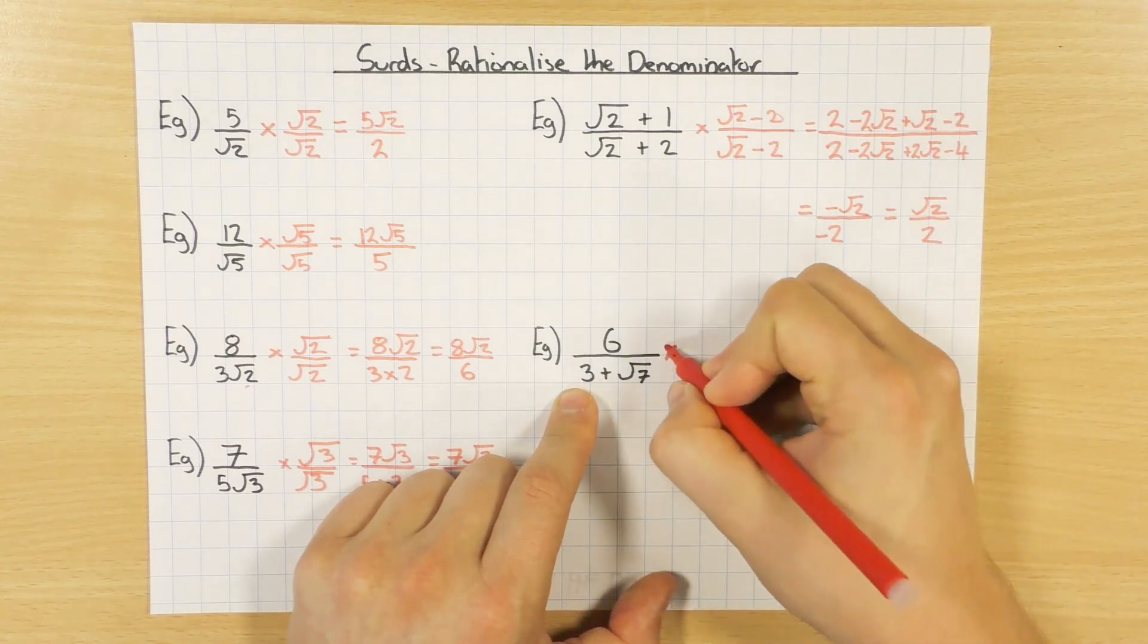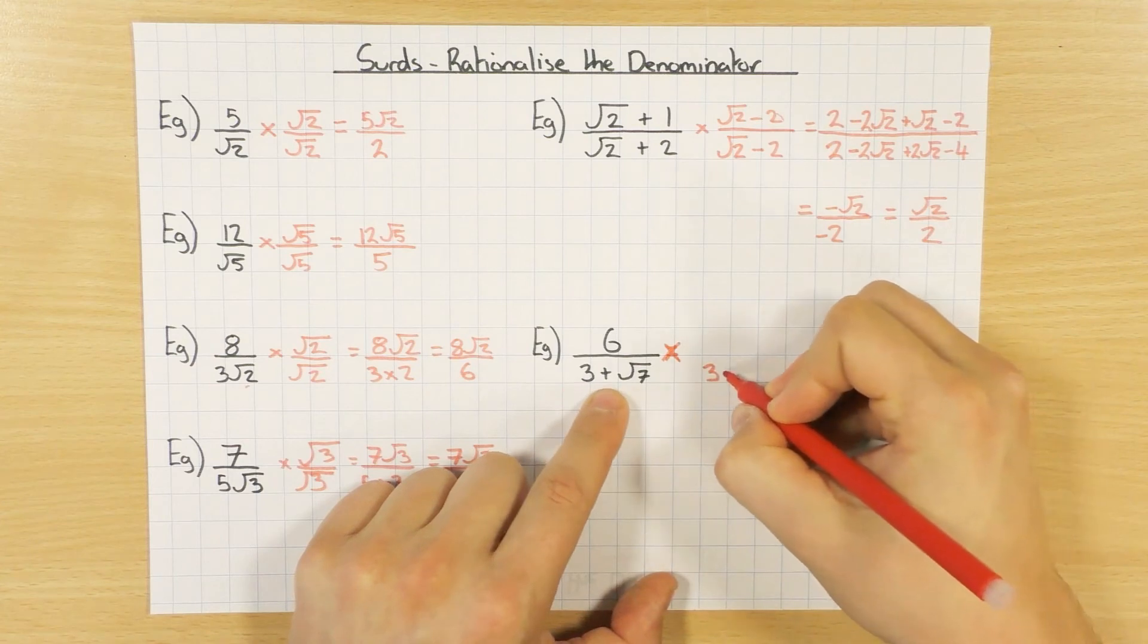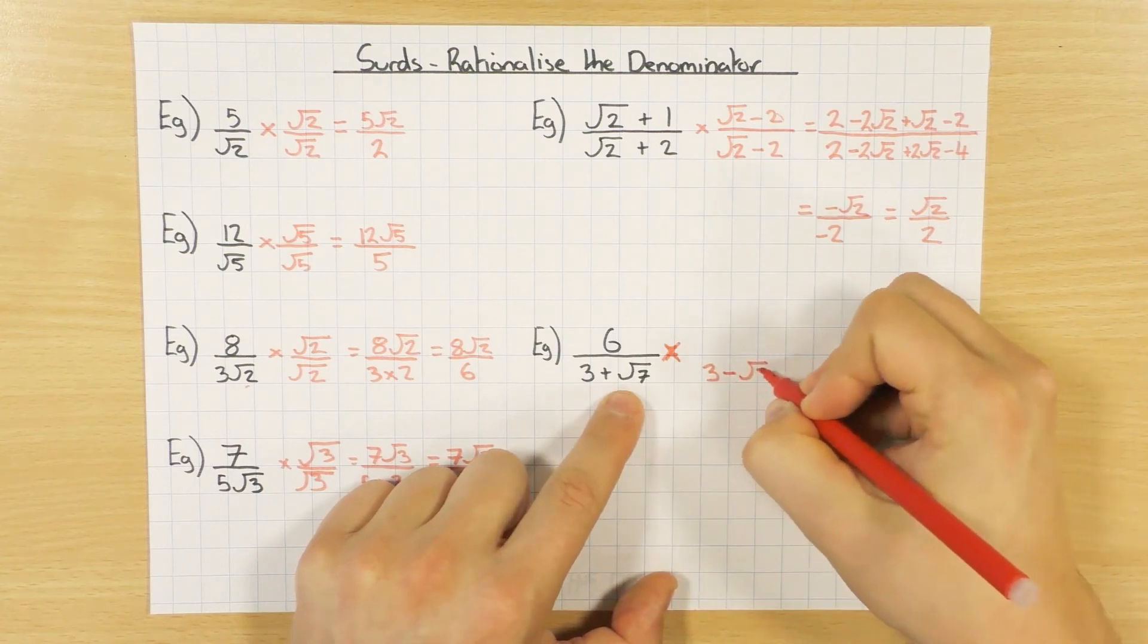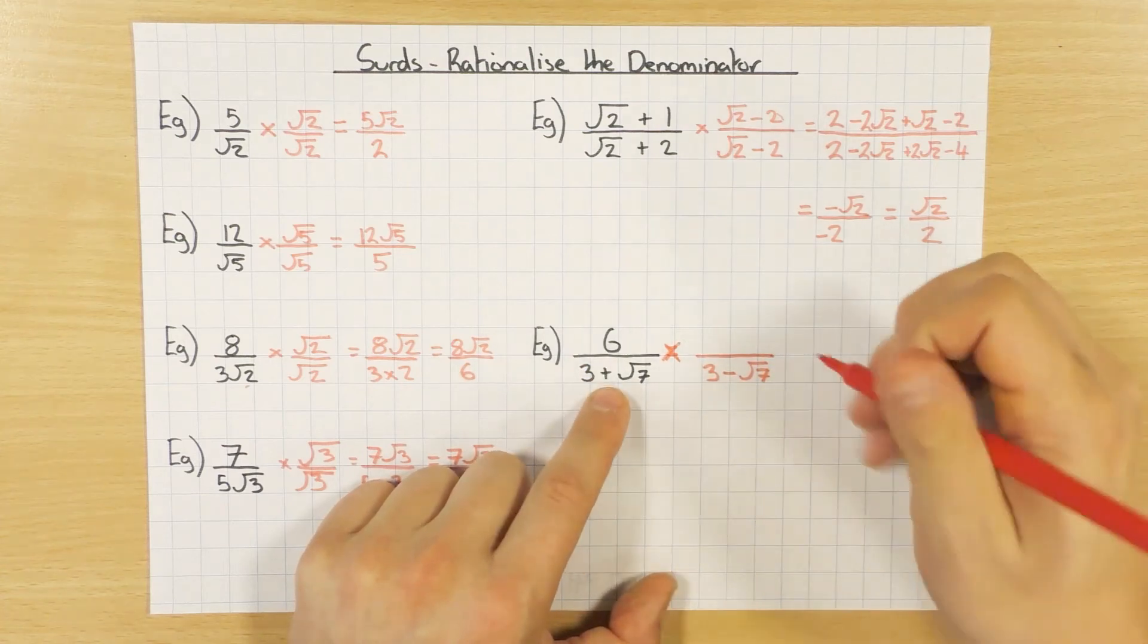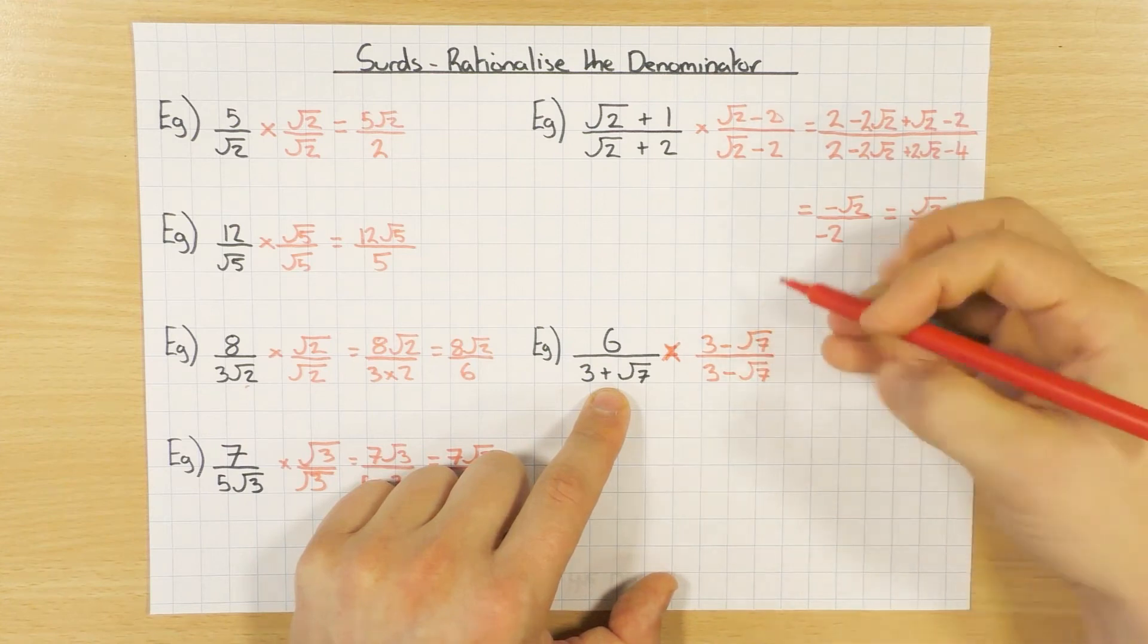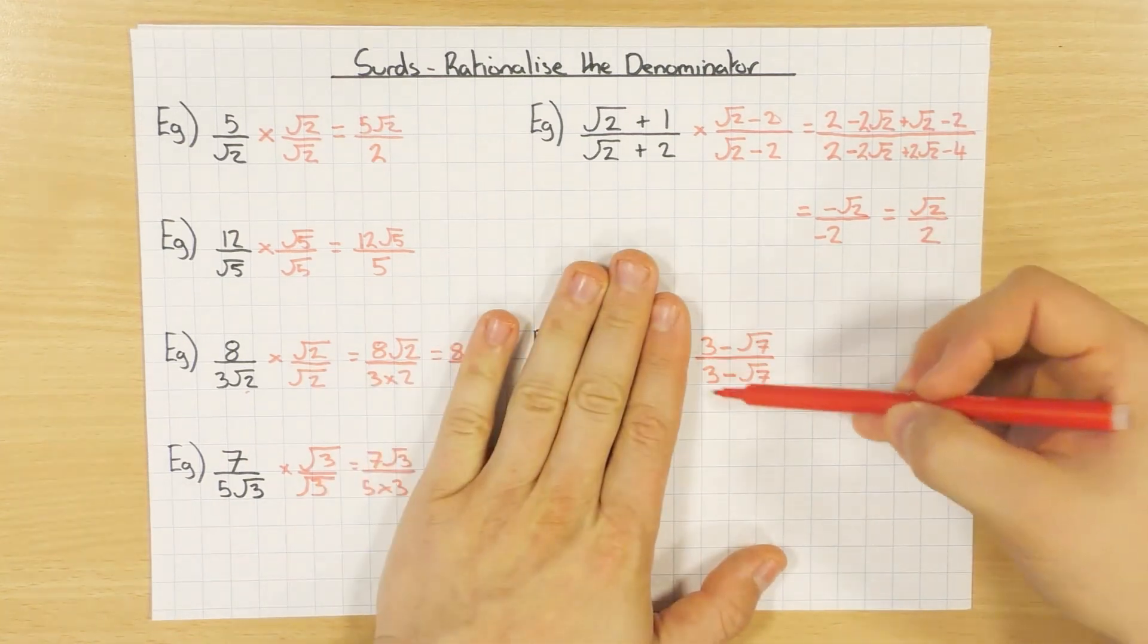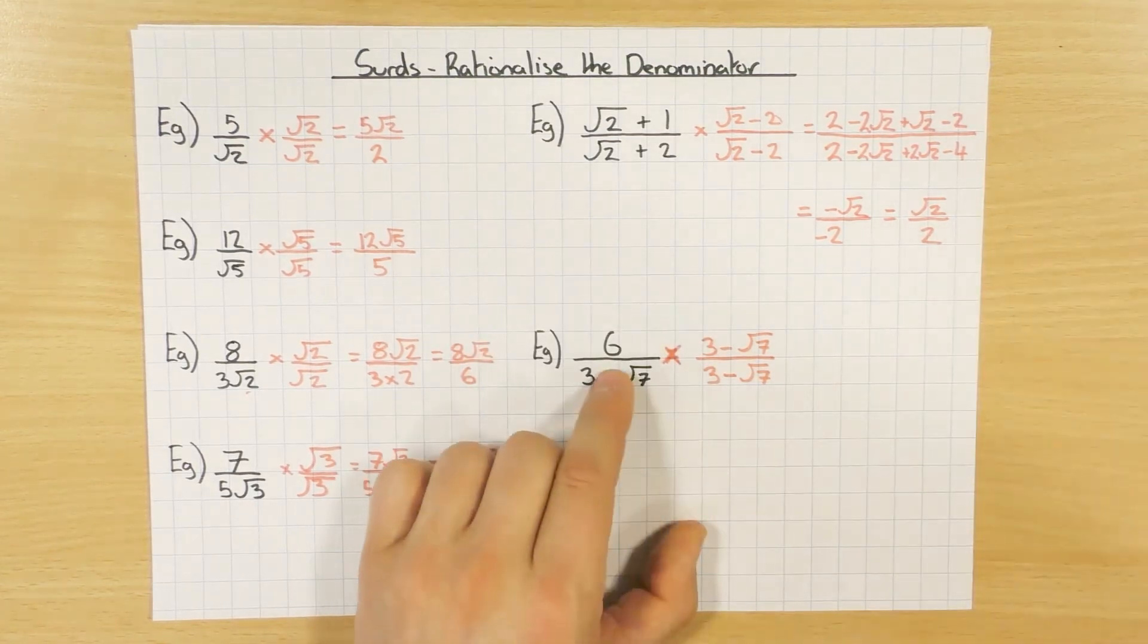So I want a times by 3, change the plus to a minus, root 7. Obviously if that's a minus, you want to change that to a plus, as long as they're different, you're in business. And obviously again, I'm just times by 1, because I'm doing that divided by that, which is the same.